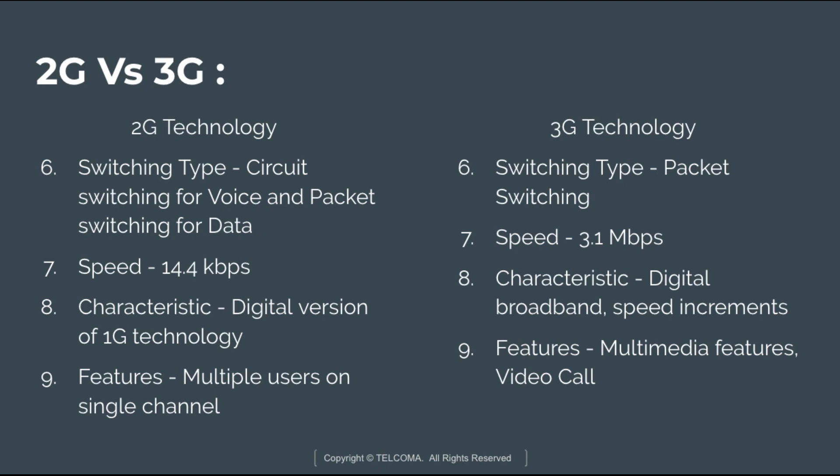In 2G technology the speed is about 14.4 kbps whereas in 3G technology the speed is about 3.1 Mbps. The characteristic of 2G technology is that it is a digital version of 1G technology, and the characteristic of 3G technology is that it is a digital broadband with speed increment technology. The feature of 2G technology is that multiple users can access services over a single channel, whereas the feature of 3G technology is that it provides multimedia features like video calls.